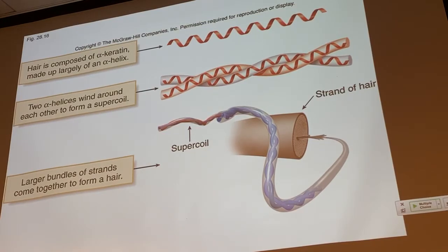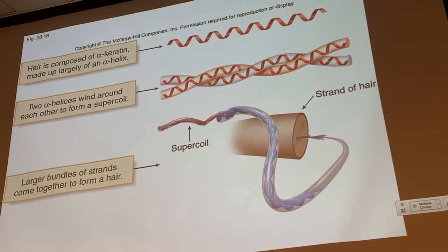That will form a single strand of hair, so a single strand of hair will have lots of these super coils in it. Now, this is not the whole story because alpha-keratin will also have some cysteines present. We know that cysteines can form disulfide bonds with another cysteine, and so our hair strands have these disulfide bonds that hold the hair in the shape that it has.